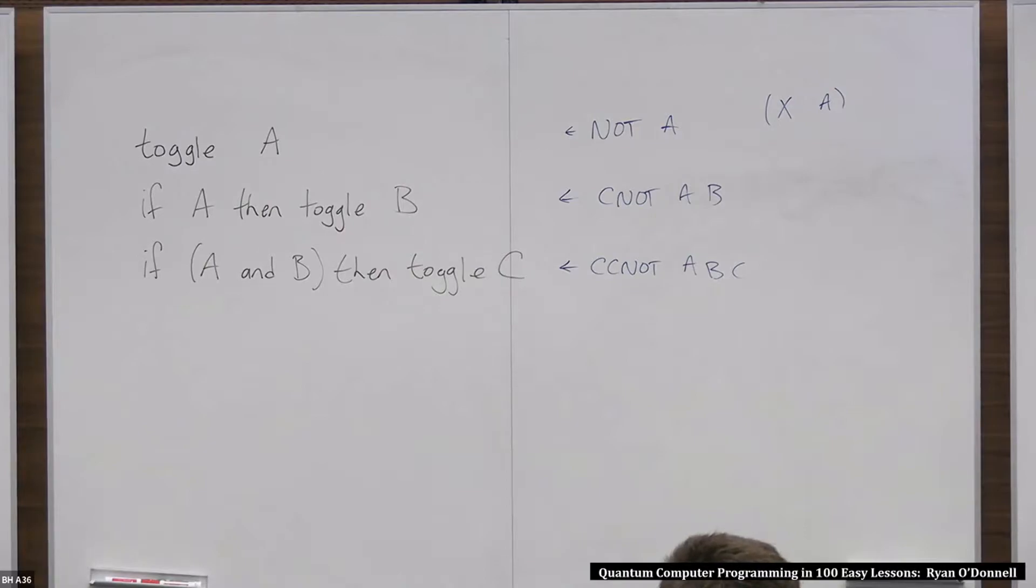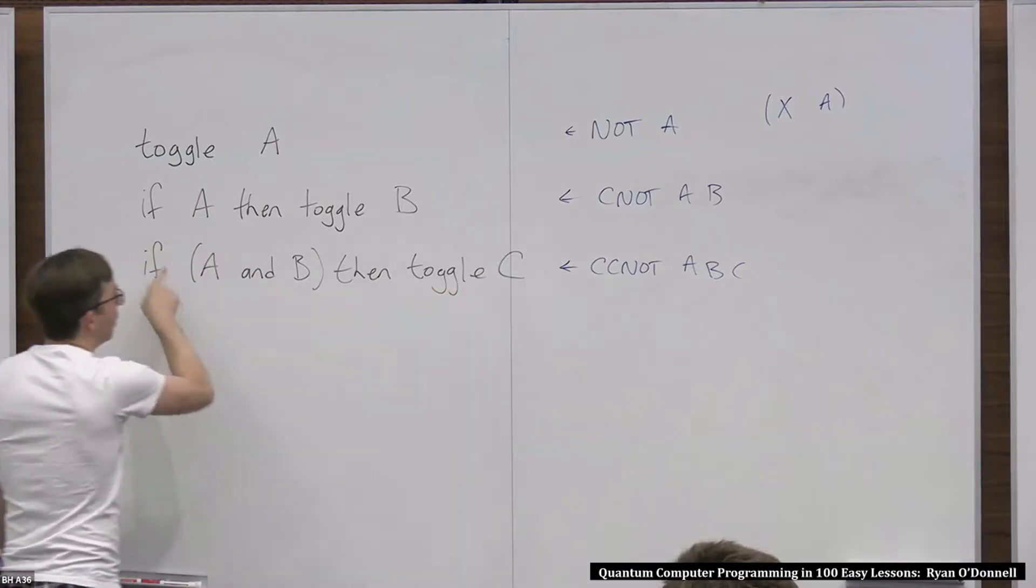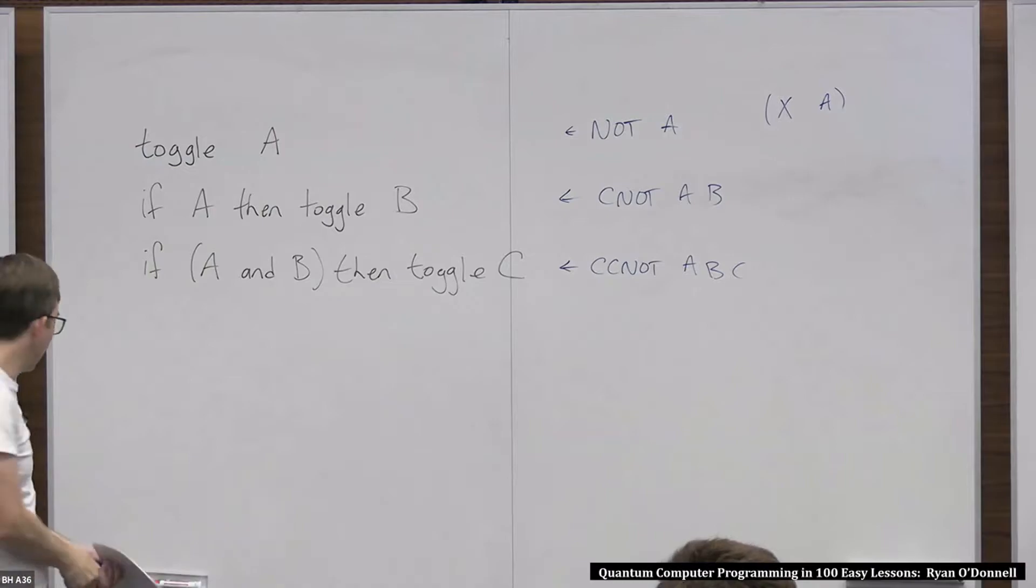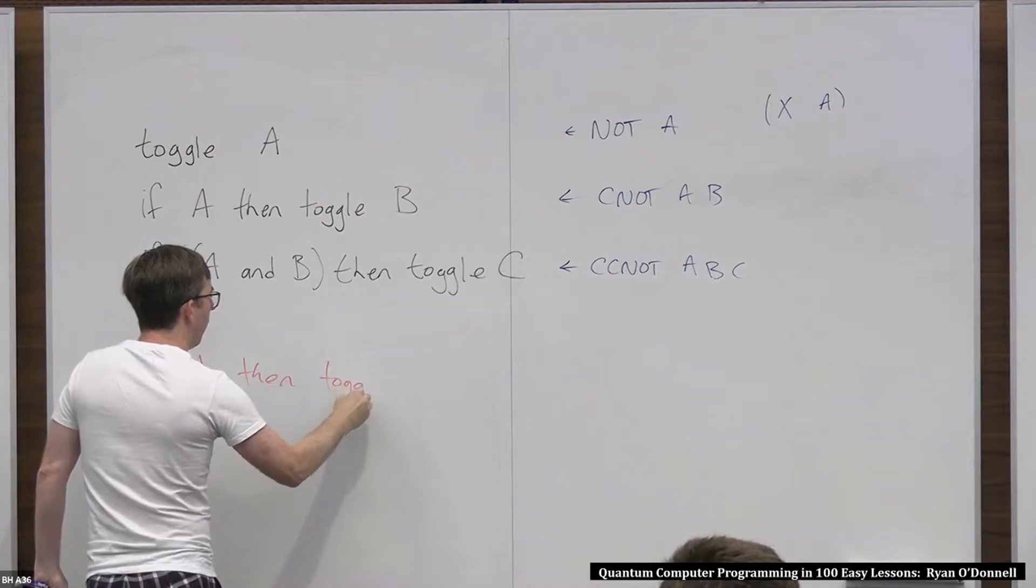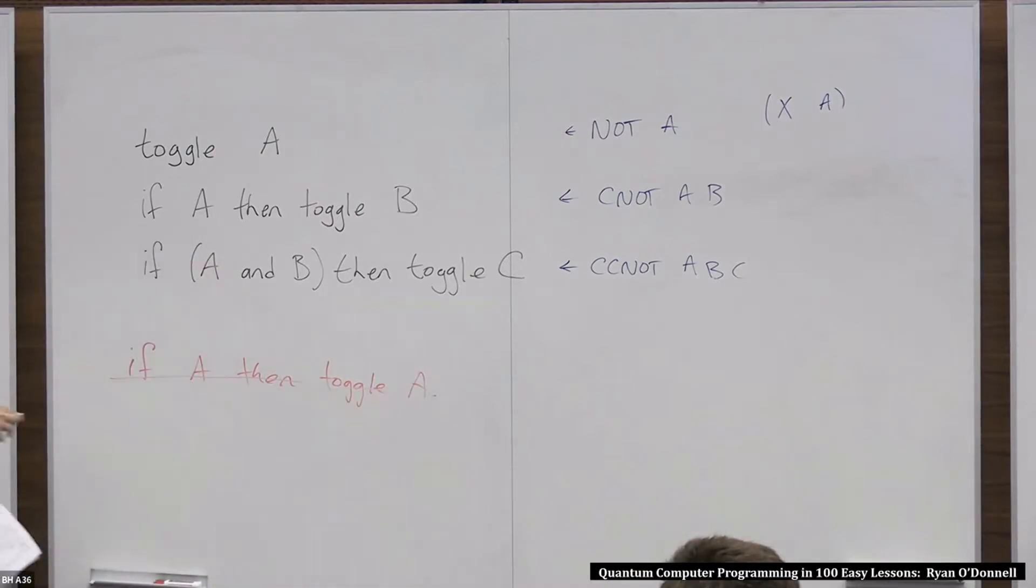One other small comment: since this instruction operates on three qubits, A, B and C, when you actually do it physically, you need three actual qubits to put into your contraption that executes this instruction. In particular, that just means they have to be different qubits. Unlike maybe in regular programming, you're not allowed to reuse the same variable inside one instruction. They always have to be different. So let me write it in red to indicate that it's not allowed. This is not valid: if A then toggle A. So this is a rule to always remember—all the qubits in an operation have to be distinct.